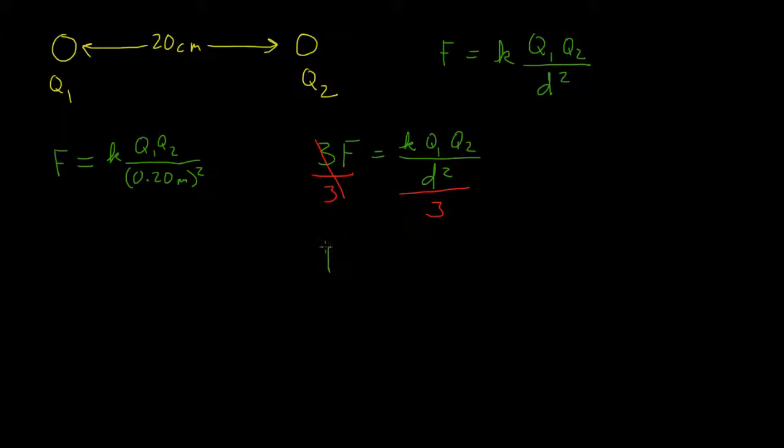So on this side I'll be left with F equals, and I'll just write this as K over 3 Q1 Q2 divided by D squared.